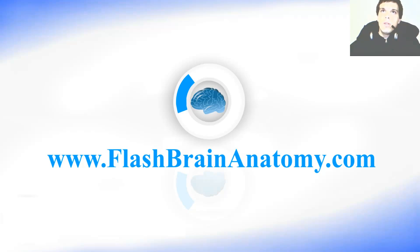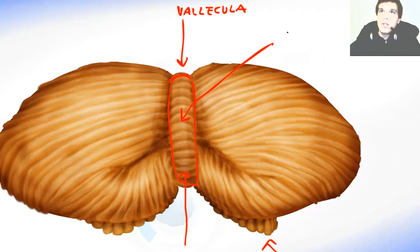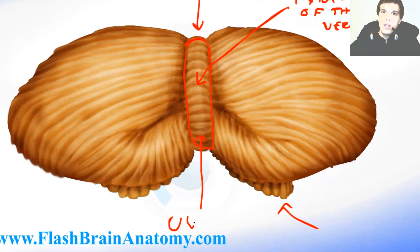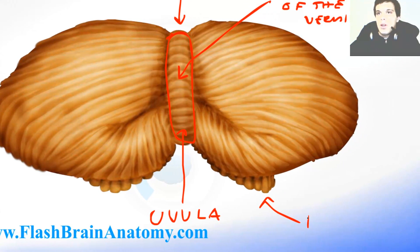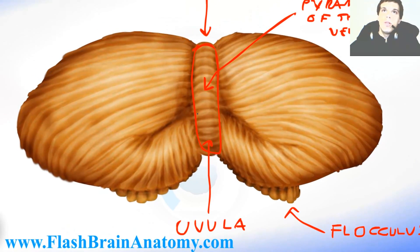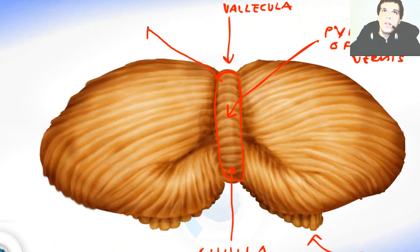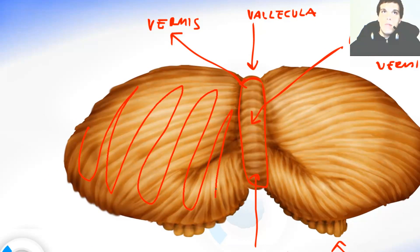Now let's write this all down. This was the vallecula and this was the pyramid of the vermis. Uvula and this was the flocculus. This whole thing was the vermis and this was the hemisphere.